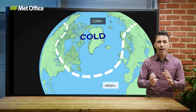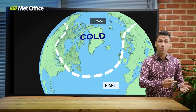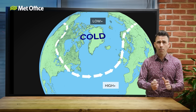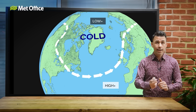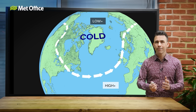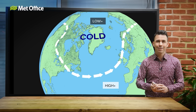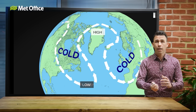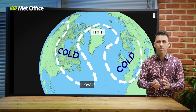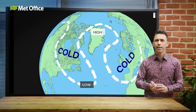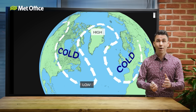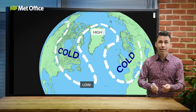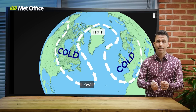But when the AO turns negative, the jet stream weakens and meanders south. Suddenly, Arctic air escapes, bringing cold air and snow to places that don't always expect it. In February 2010, the AO index was minus 4.266 — the lowest on record for any calendar month.